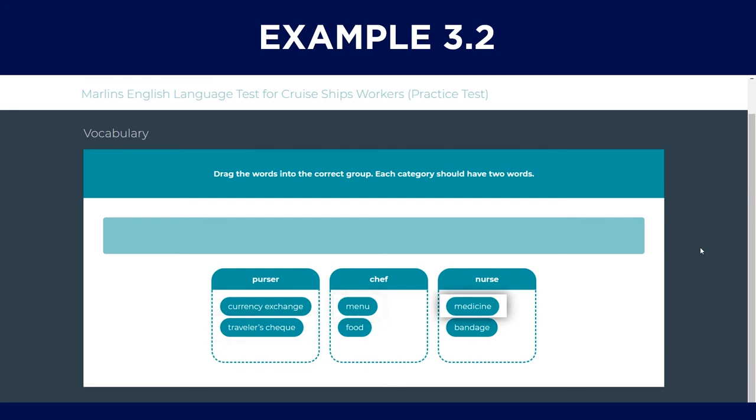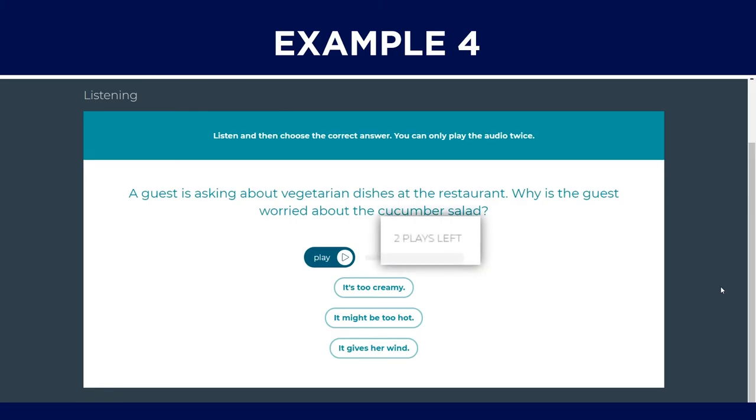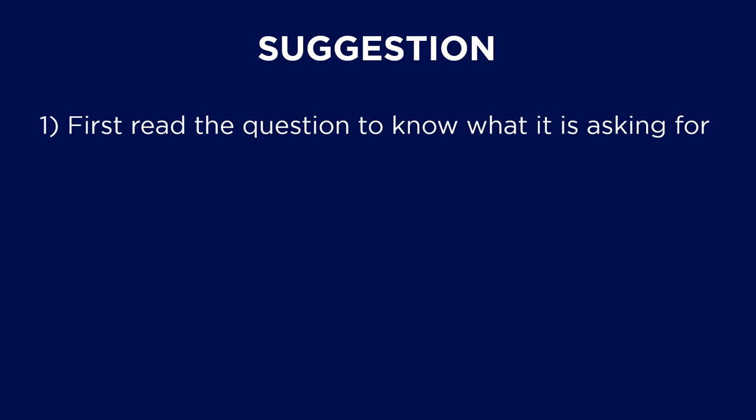Next, when taking the test, there are some points that you can take note of to potentially do better. Firstly, on listening questions, listening questions are normally in the first section to clear in the test. You can only hear the dialogue twice. For each listening question, thus the first suggestion will be for the candidates to read the question first, to have a rough idea of what it is asking for, then proceed with the listening of the dialogue.